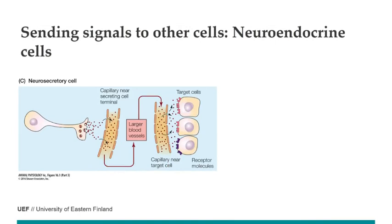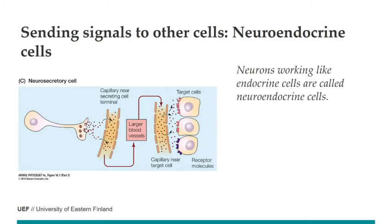We also have mixtures such as neuroendocrine cells, which we already learned about in the case of melatonin release. These are neurons that don't have synapses but release their signal into the circulation, working just like endocrine cells. The good point is that a neuroendocrine cell can receive a synapse at the other end, giving quite fast control. However, there may not be so many of them releasing hormones together into the circulation.